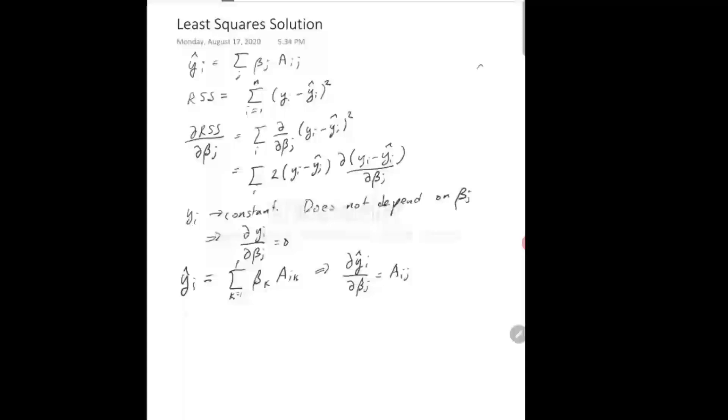All right. So when we put these guys in here, that just means that the derivative with respect to the residual sum of squares of beta j is just going to be the sum over the samples i of 2 of y i minus y hat i times the derivative of y i, which is just 0, minus the derivative of y j with respect to this, which is a i j. Well, let's just... We can write it like this, taking that minus out, y i minus y hat i times a i j.